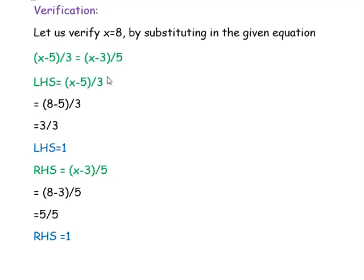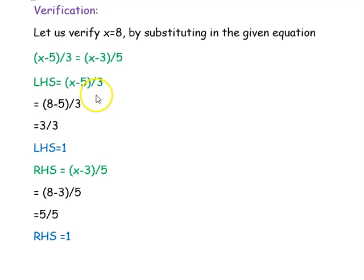Let us verify by substituting in both the left hand side and right hand side. With x equal to 8, the left hand side is x minus 5 divided by 3: substituting 8 gives 8 minus 5 divided by 3, which is 3 divided by 3, so the left hand side equals 1.